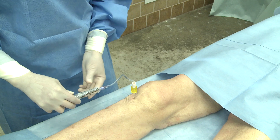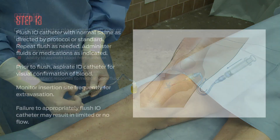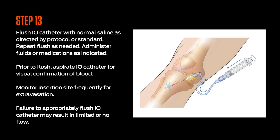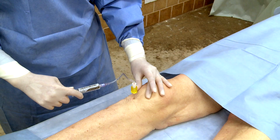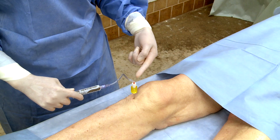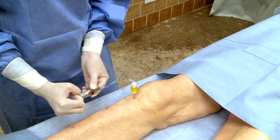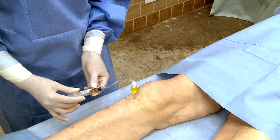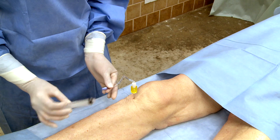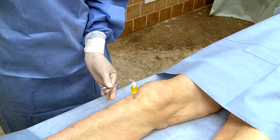Step 13: Flush the SAM-IO with normal saline as directed by protocol or standard. Repeat flush as needed. Failure to appropriately flush the SAM-IO catheter may result in limited or no flow. Once the SAM-IO catheter has been flushed, administer fluids and medications as indicated. Caution: monitor the insertion site frequently for extravasation, and do not leave the catheter inserted for more than 24 hours.